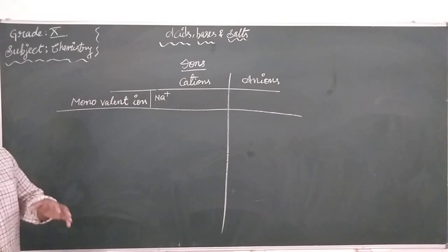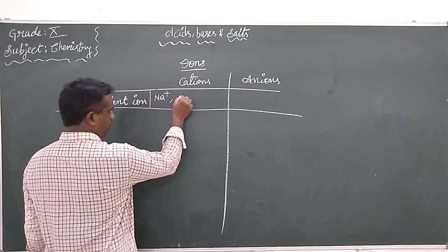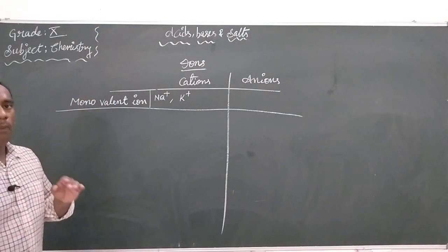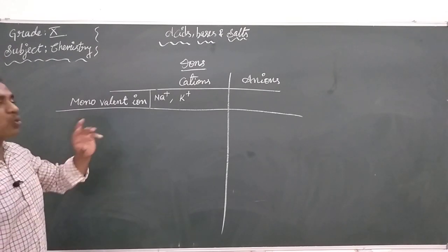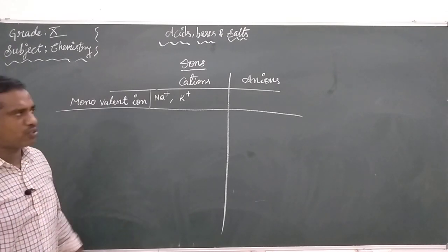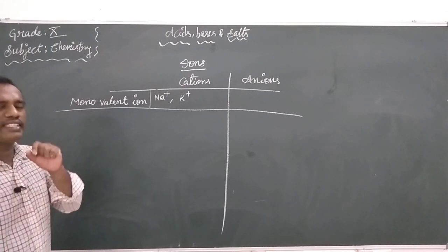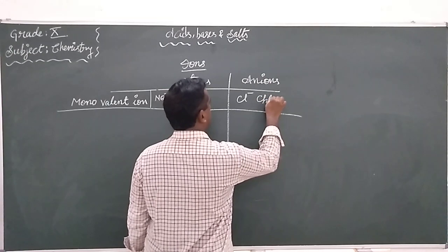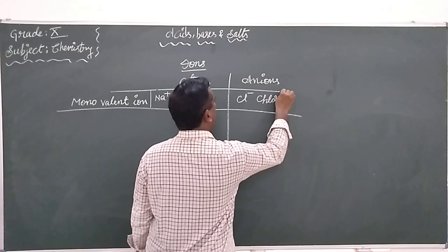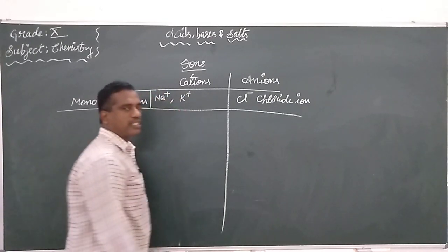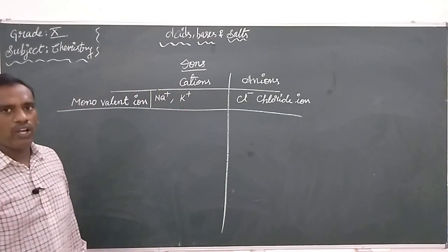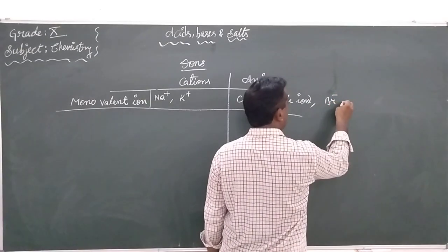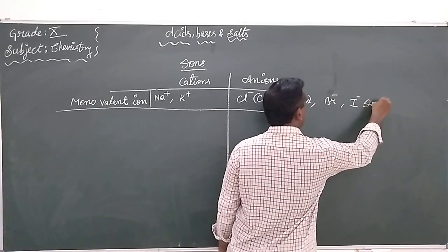Examples of monovalent cations include the sodium ion and the potassium ion. Coming to anions with a single charge — we call this one the chloride ion. Similarly, we have the bromide ion or the iodide ion. Whenever the name ends with '-ide', such as chloride, bromide, or iodide, the halogens are going to have a negative charge.